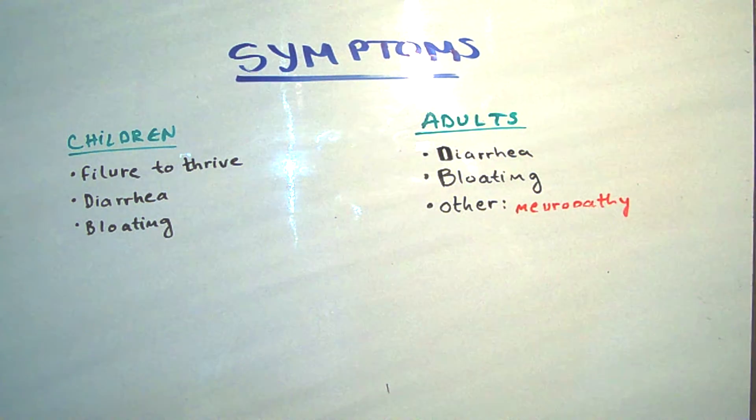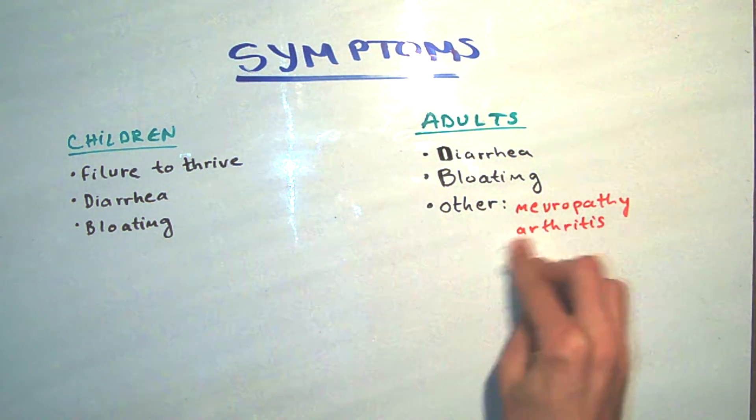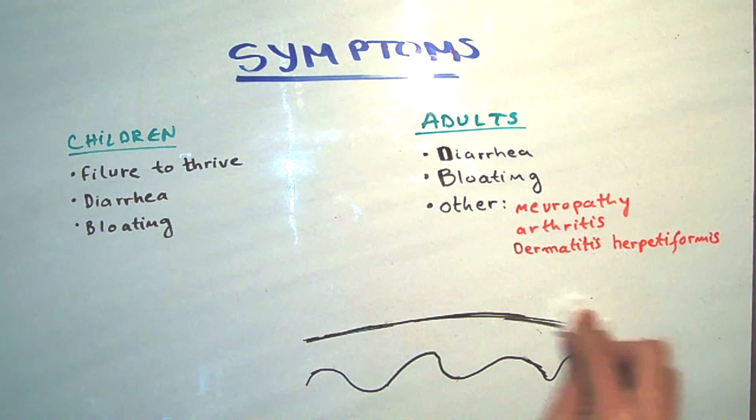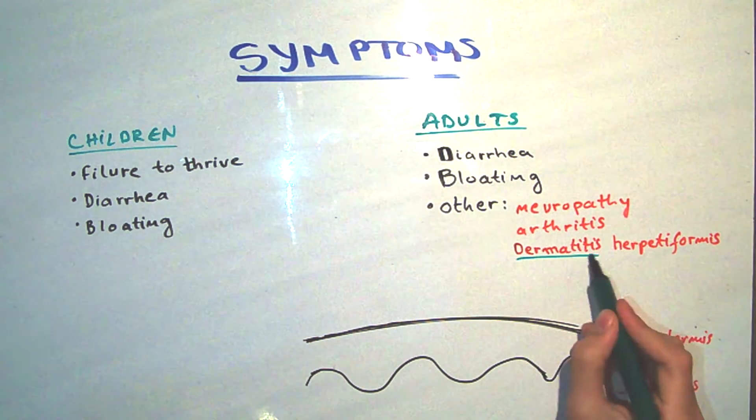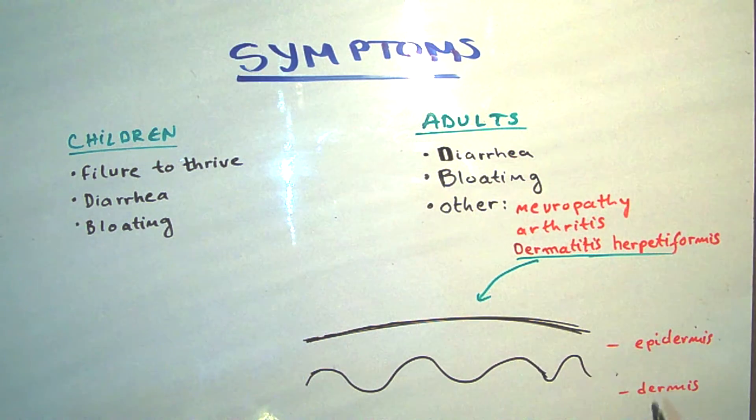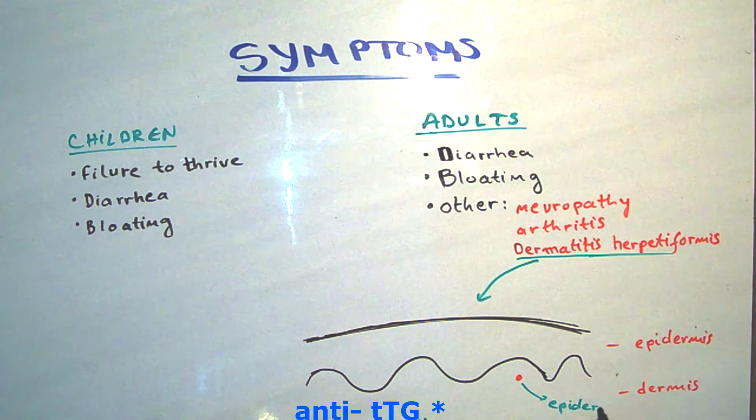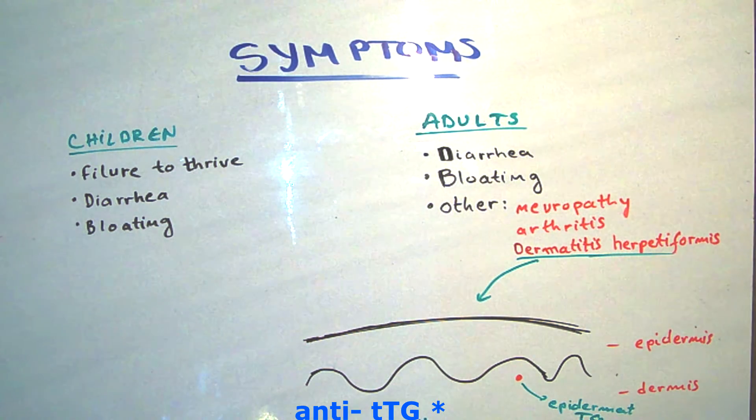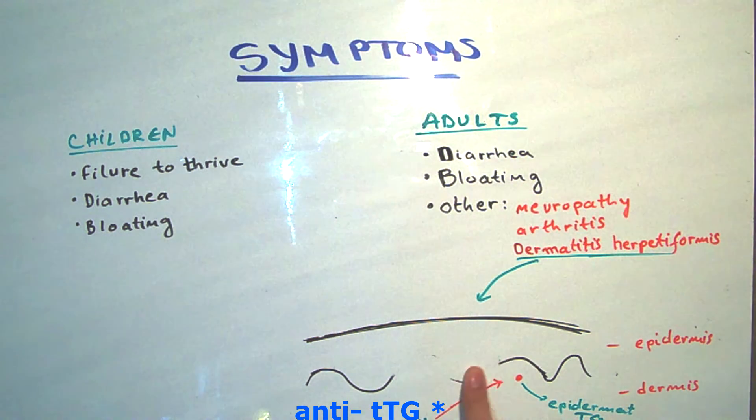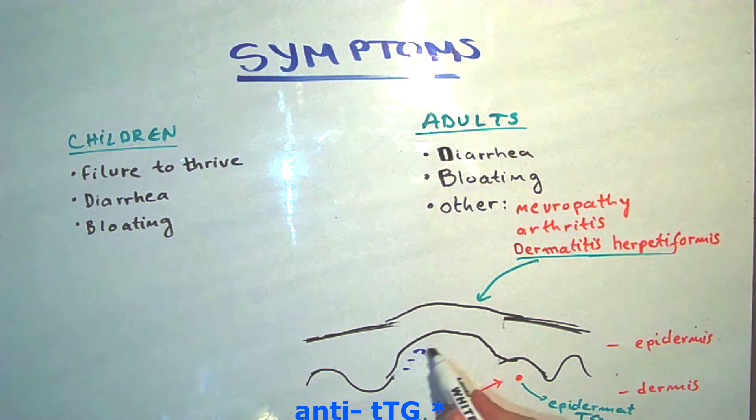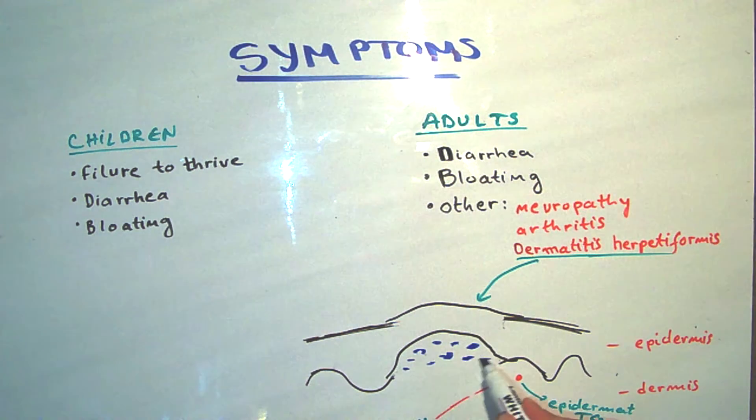Such as neuropathy, arthritis, dermatitis herpetiformis. Dermatitis herpetiformis is interesting in a way that there is a cross-link between anti-tissue transglutaminase and epidermal transglutaminase, knowing that the epidermal transglutaminase is very similar in structure with tissue transglutaminase. In that place starts the inflammation, manifested as dermatitis herpetiformis.